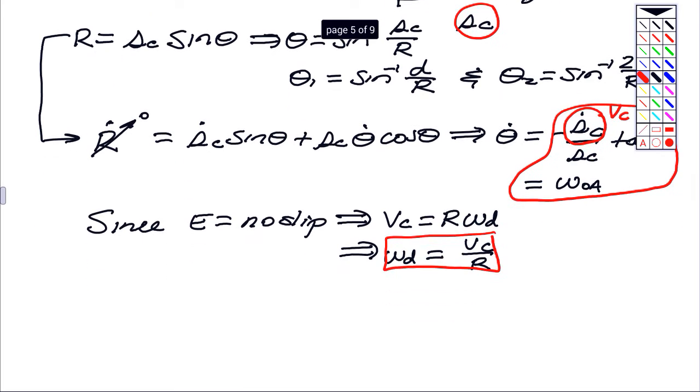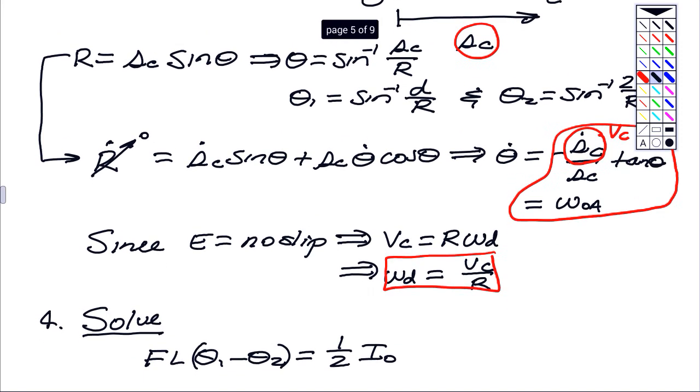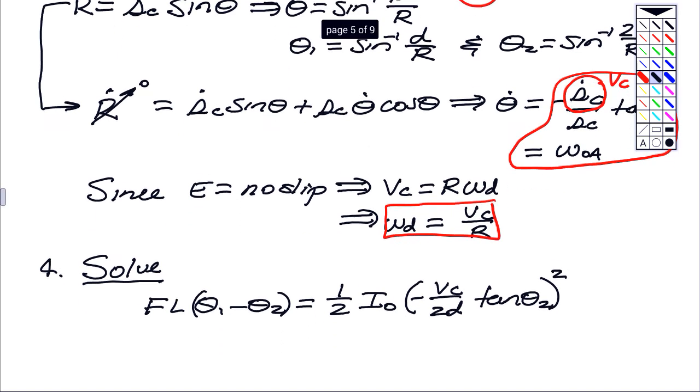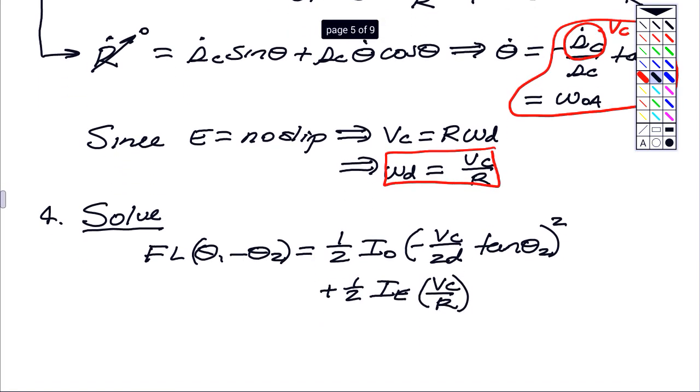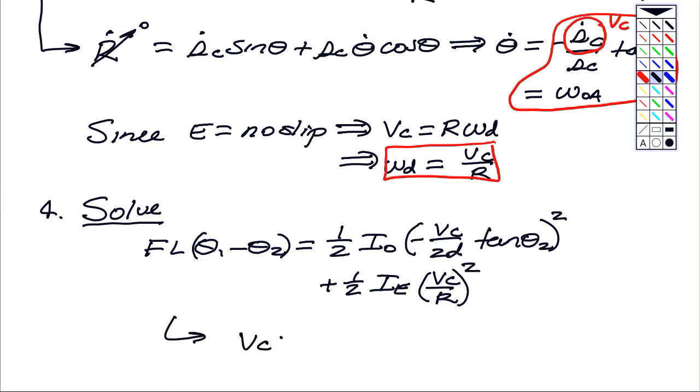So to solve, I have the work done again, that's F times L theta 1 minus theta 2. We found a way to calculate those. Vc is equal to 1/2 IO omega OA, so that is equal to Vc divided by the distance SC, which is 2D, tan theta 2 squared, plus 1/2 mass moment of inertia about E times Vc over R squared. So we have one single equation we can solve for the speed of point C.